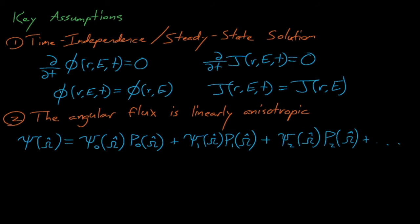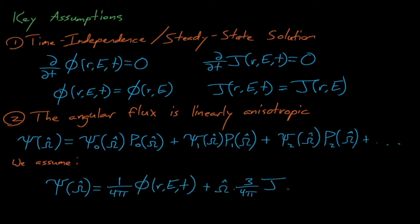An isotropic flux would only require the first of these terms, and the more complicated the angular flux is as a function omega, the more terms we need to include in this expansion to accurately represent the flux. By assuming that the flux is only linearly anisotropic, we assume that we only need the first two terms in this expansion, and that the flux is only a linear function of omega. If our angular flux is strongly dependent on direction, then this approximation can break down, and we might need to have an omega squared, or an omega cubed, etc. term in our approximation here.